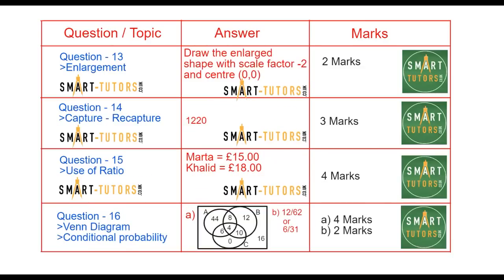Question number thirteen is enlargement. You've got to draw the shape with a scale factor of minus two and the center of enlargement is zero, zero. Question number fourteen is capture-recapture. They already advised this question was coming. Question number fifteen is use of ratio. Question number sixteen is the Venn diagram, and the last part is conditional probability for two marks.